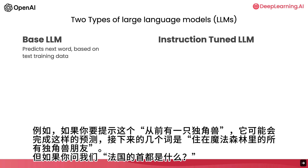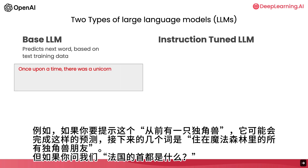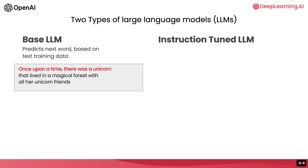So for example, if you were to prompt a base LLM with 'once upon a time there was a unicorn,' it may complete this — that is, it may predict the next several words are 'that lived in a magical forest with all unicorn friends.'